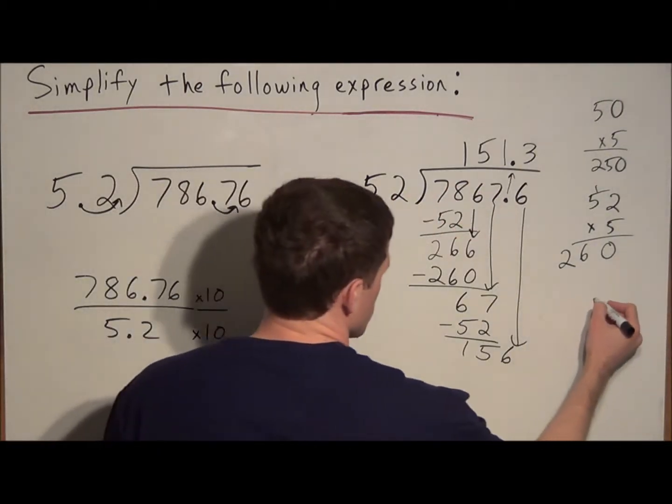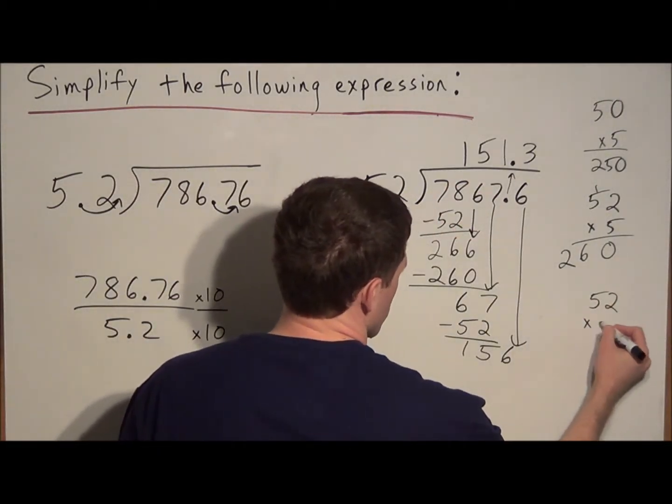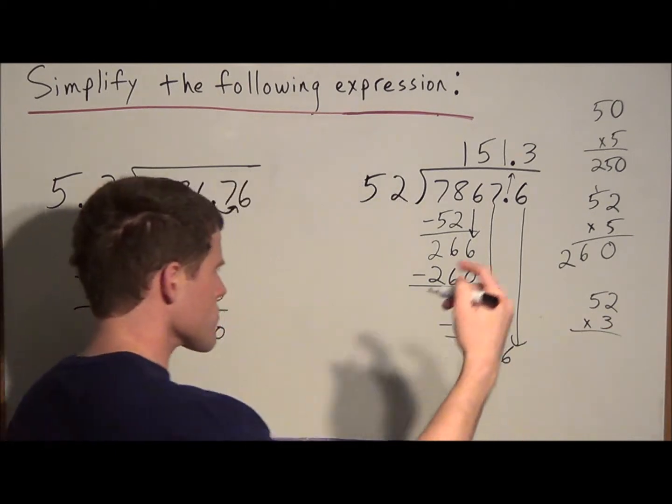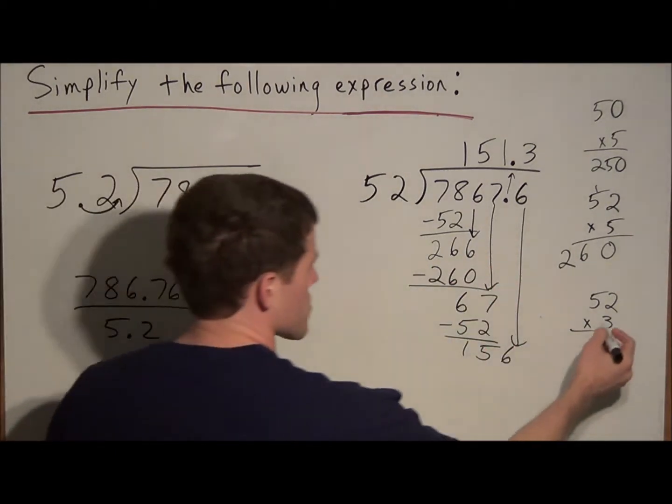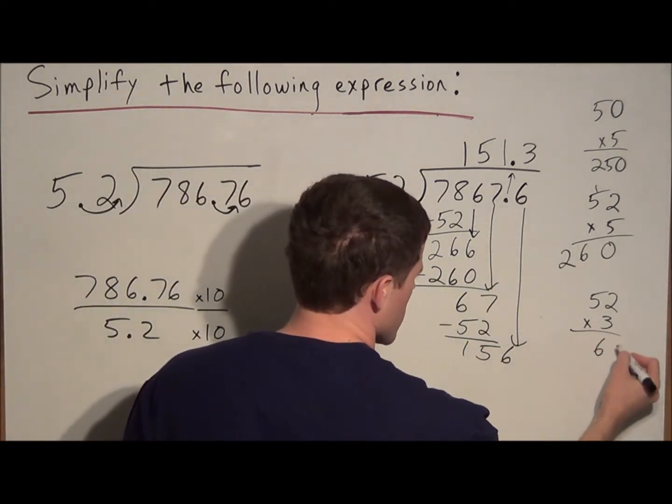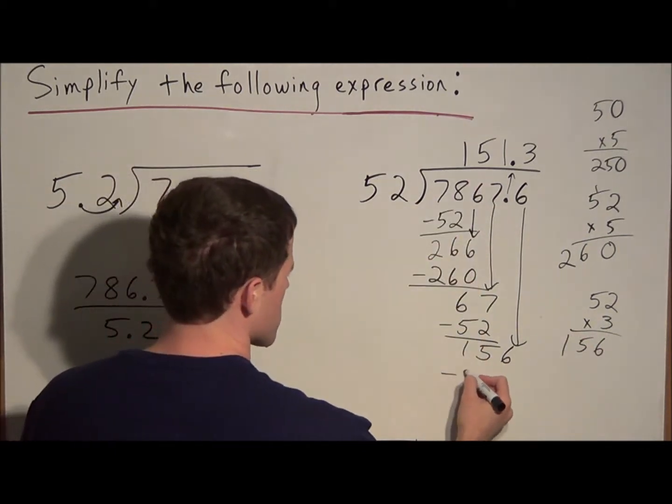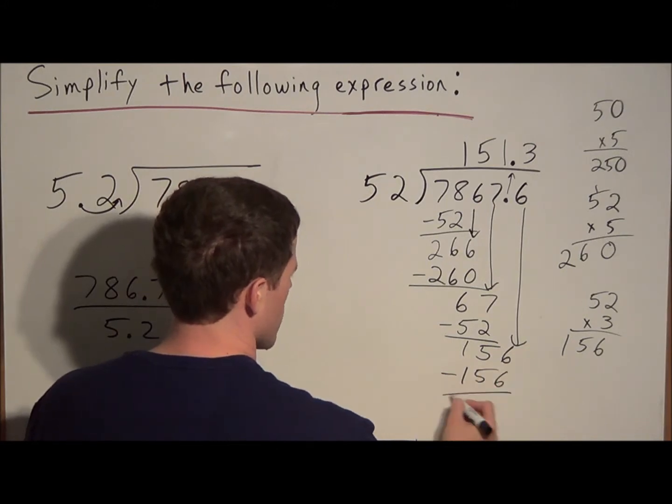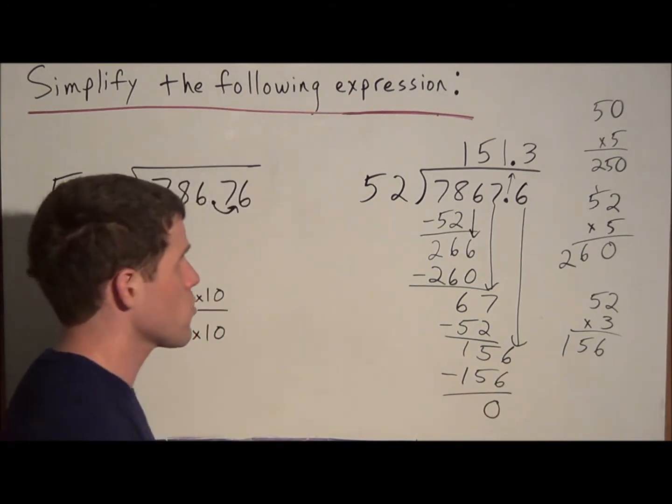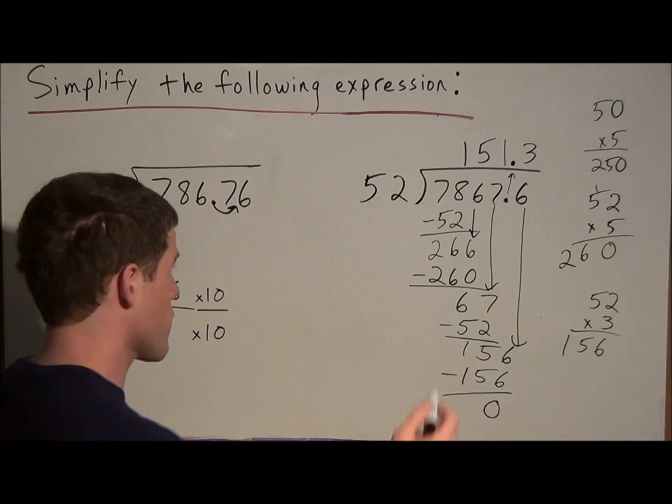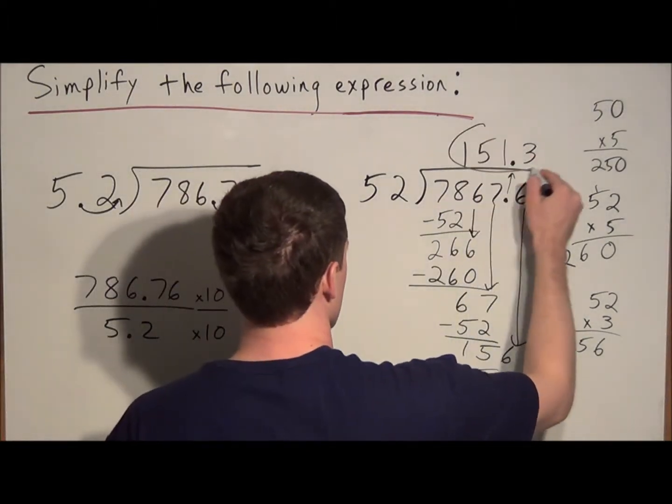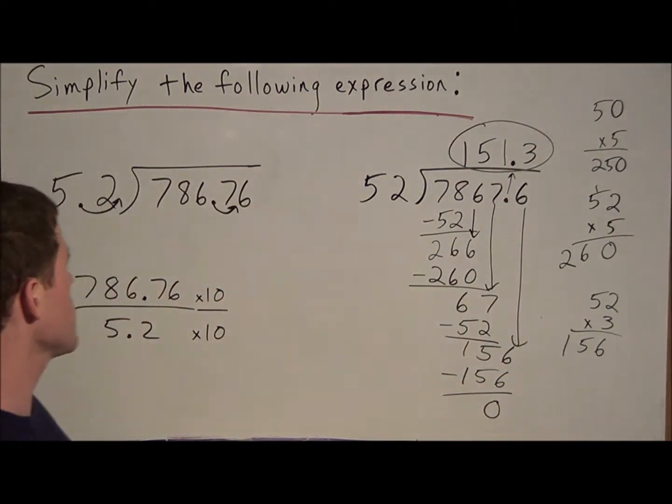We do 3 times 52, and if your mental math isn't quite there yet, we'll work this out. But we'll see 3 times 2 is 6, 3 times 5 is 15. We get exactly 156. So when we subtract the 156, we have a remainder of 0, which tells us that we're done, that we found our answer is 151.3.